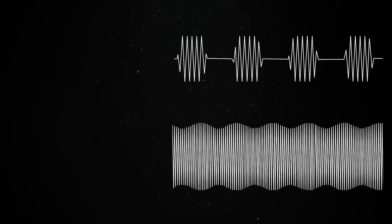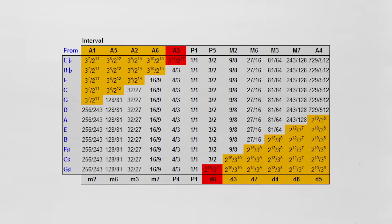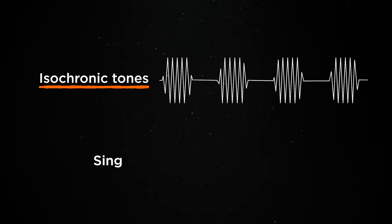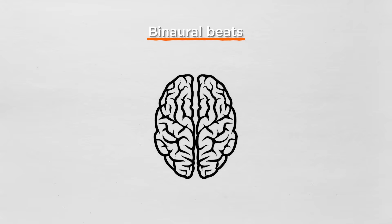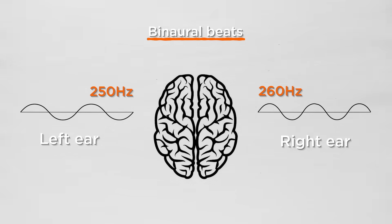Moreover, sound-based therapies such as isochronic tones and binaural beats offer further opportunities to experience specific frequencies. Isochronic tones are single tones that pulse on and off at specific intervals, while binaural beats involve presenting two slightly different frequencies to each ear, resulting in the perception of a third frequency.